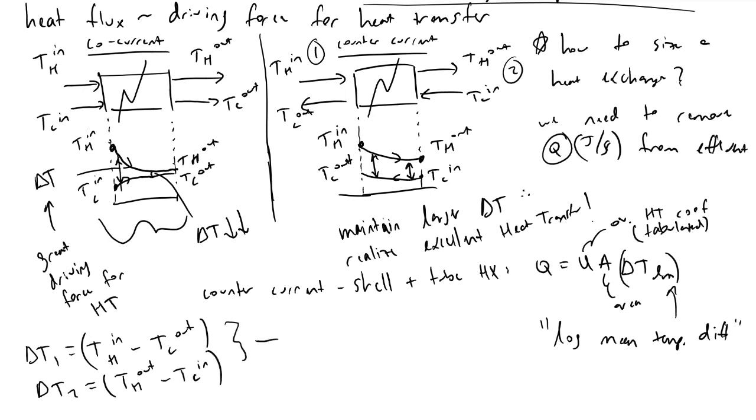What we take with these two variables is we define the log mean temperature difference to be equivalent to delta T one minus delta T two divided by the natural logarithm of delta T one over delta T two.